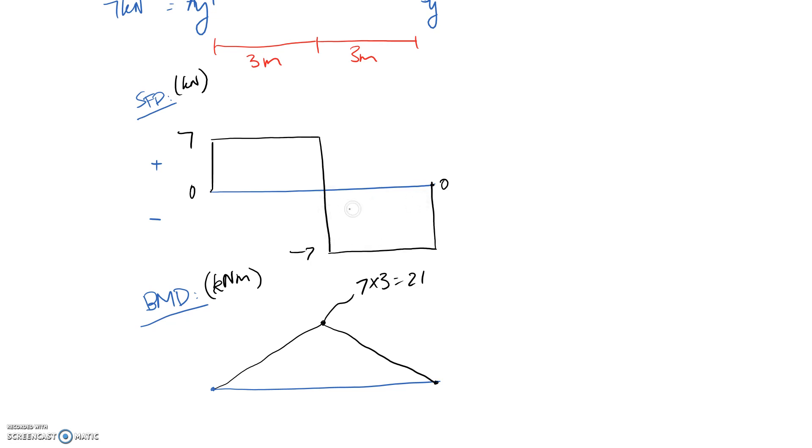Because it's the same amount of area in here. You can double check it if you want. It's going to be where you started, which is 21 minus the area in here, since it's on the negative side of the diagram. So 7 times 3 again, which should be 0. So that's our bending moment diagram.